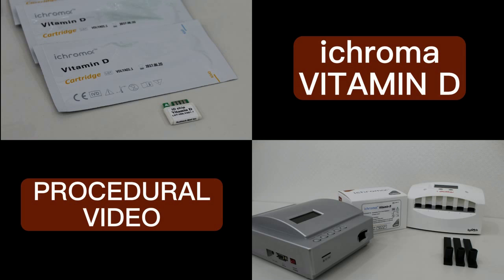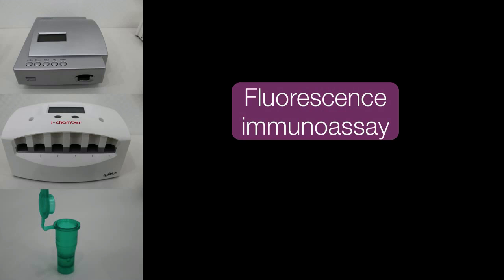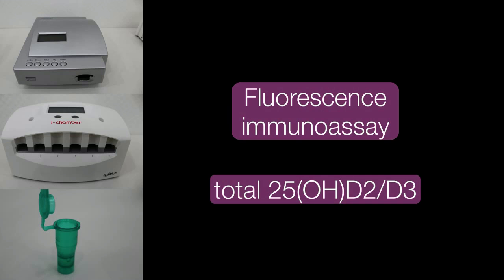This video will walk you through the proper procedure of ICHROMA vitamin D. ICHROMA vitamin D, along with ICHROMA reader, is a fluorescent immunoassay for the quantitative determination of total 25-OH-D2-D3 level in human serum and plasma.